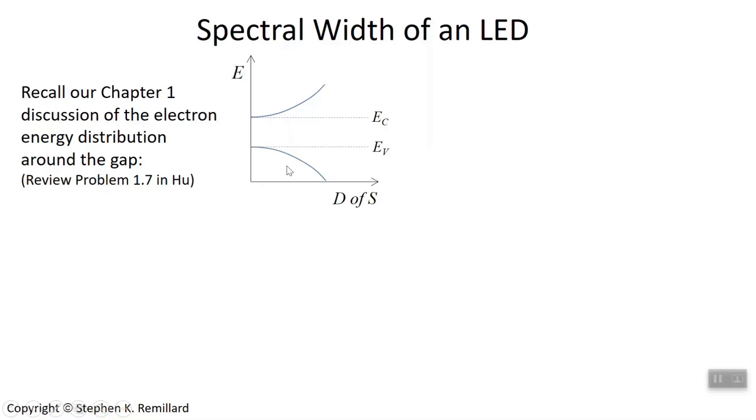At a given energy, you can just go over here and read how many states are available. These states aren't filled. If they were, that would mean that at infinite energy you have an infinite number of electrons, which of course is absurd. We need to account for the probability that each one of these states is occupied.